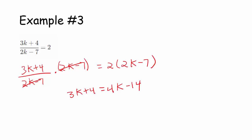And again, we need to isolate all of the k's on one side of the equation. So I'll subtract 3k from both sides here, leaving me with 4 equals 1k minus 14. And then I'll add 14 to both sides. I get 18 equals k for my answer.